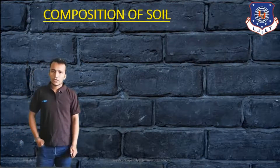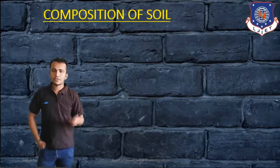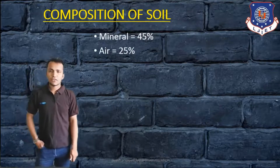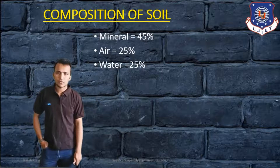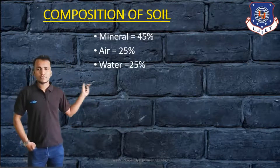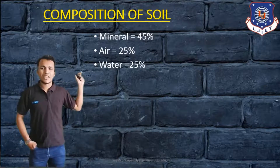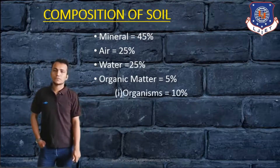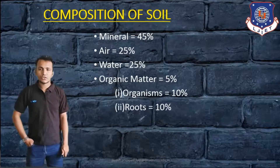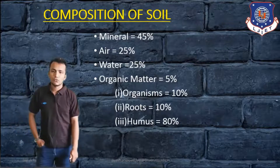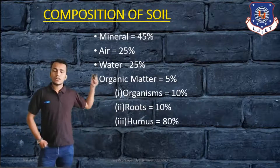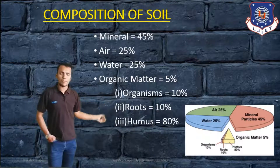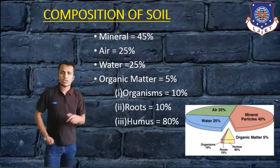The composition of soil can be broken into different parts. Mineral is 45 percent, air is 25 percent, and water is 25 percent. The remaining 5 percent is organic matter, which includes organisms at 10 percent, roots at 10 percent, and humus making up the rest. So those are the different percentage criteria of soil, which can also be seen in graph form.